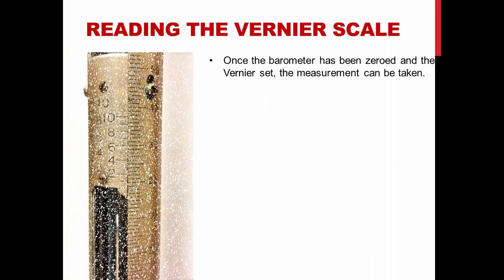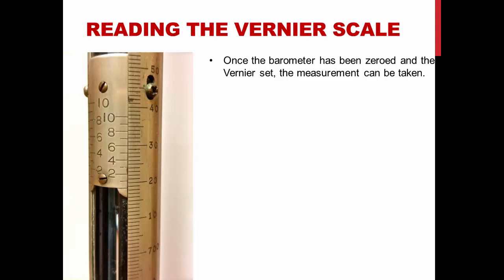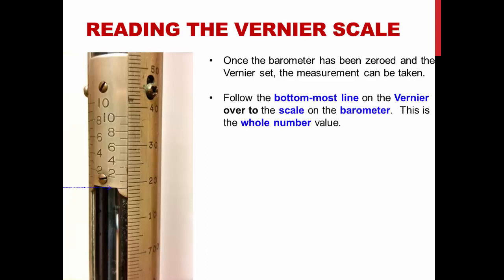Once the barometer has been zeroed and the vernier set, the measurement can be taken. Follow the bottom-most line on the vernier over to the scale on the barometer. This is the whole number value.